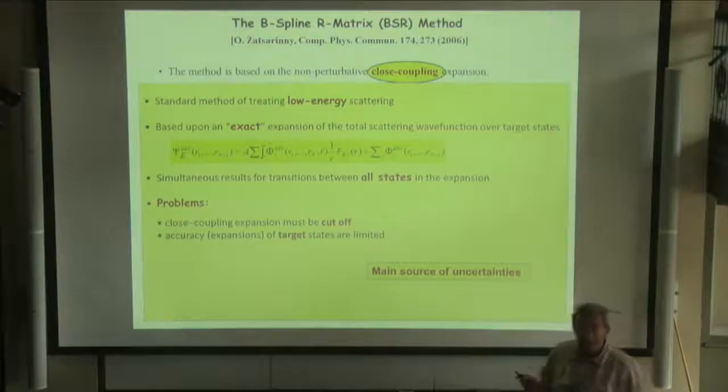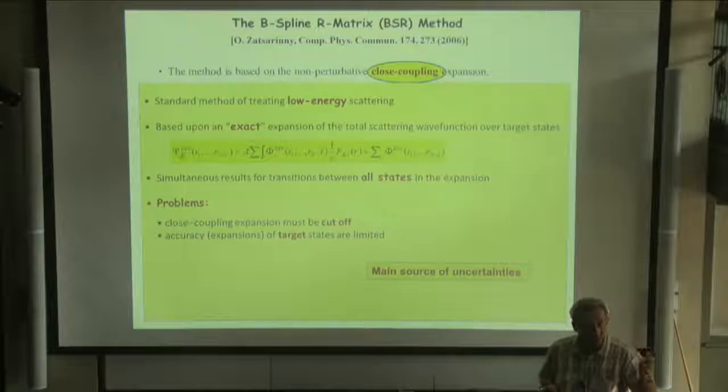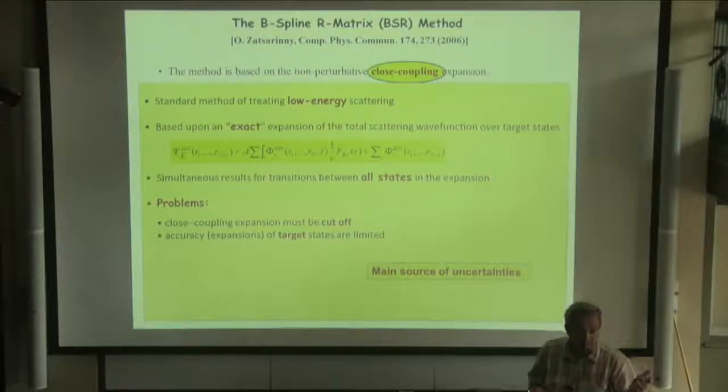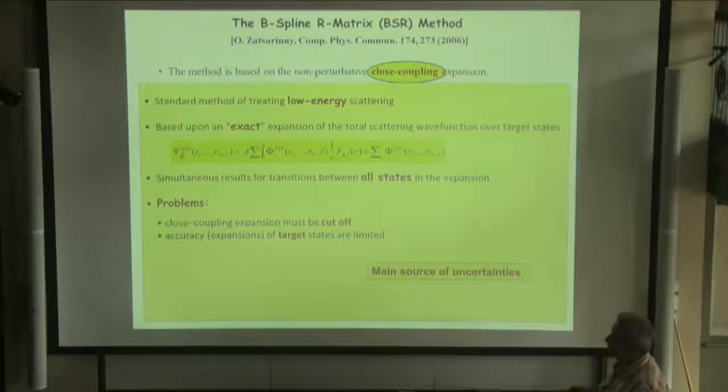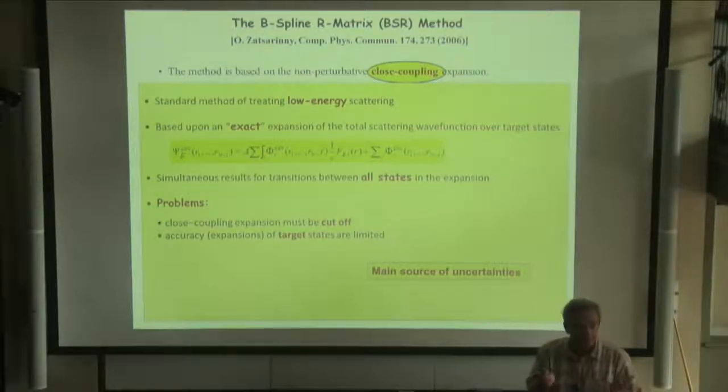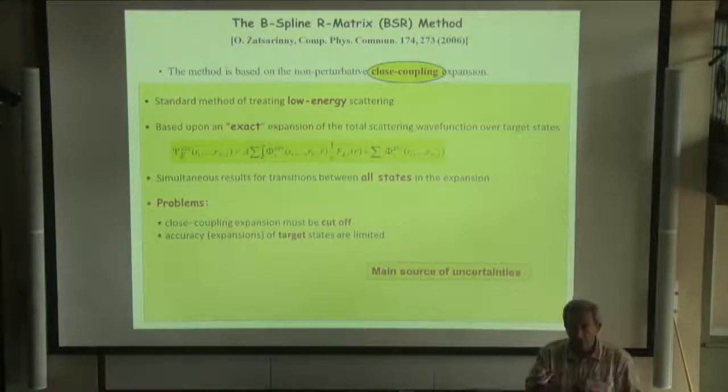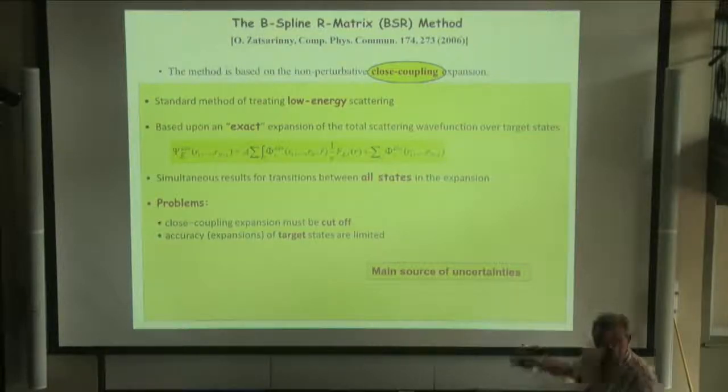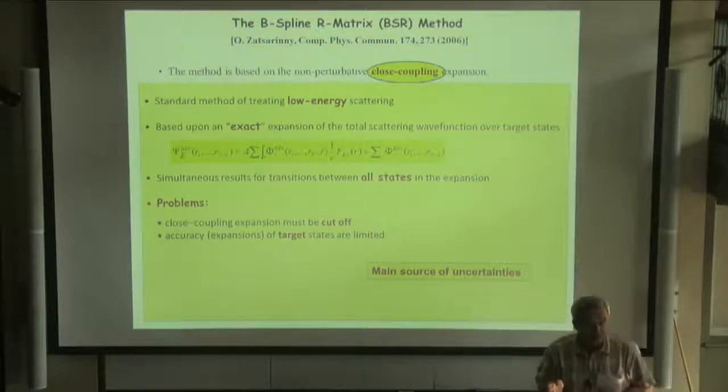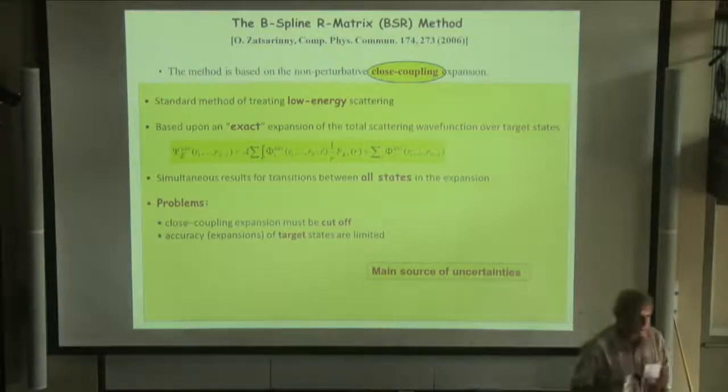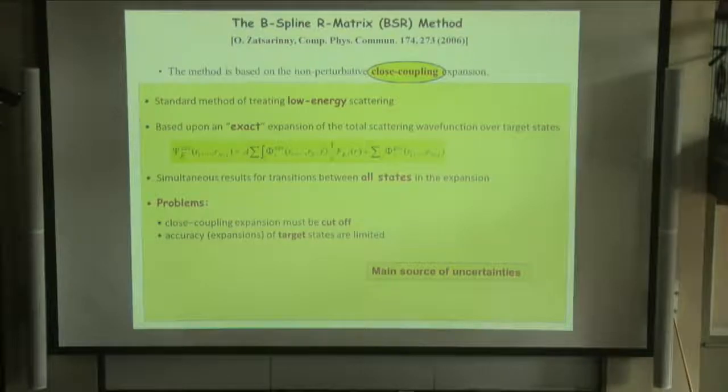In principle, you can get very accurate results provided you have very accurate target description and you include in close-coupling expansions all main scattering channels. But for many-electron atoms, it is a very difficult computational problem, and you always look for a compromise in target expansion and number of channels included. These two limitations are the main source of uncertainties for the calculation of electron impact cross-sections.